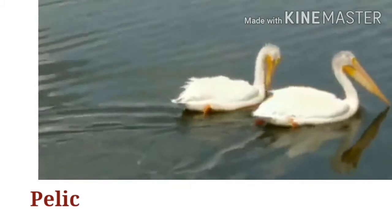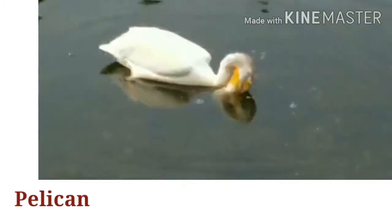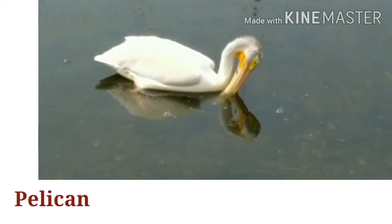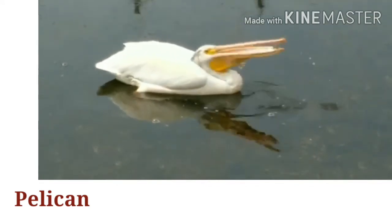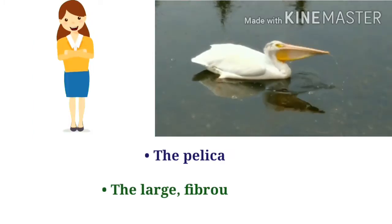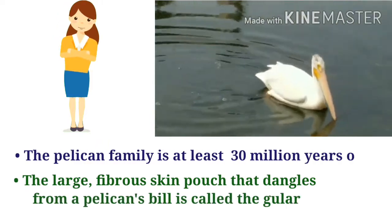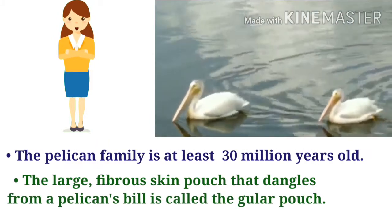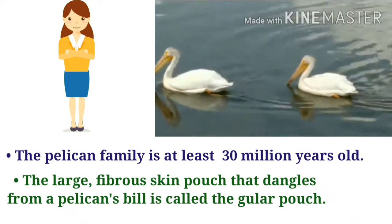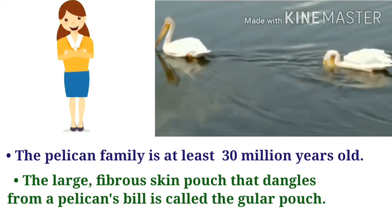Who is this? This is a pelican. P-E-L-I-C-A-N. Let's introduce the pelican. The pelican family is at least 30 million years old. The large fibrous skin pouch that dangles from a pelican's bill is called a gular pouch.